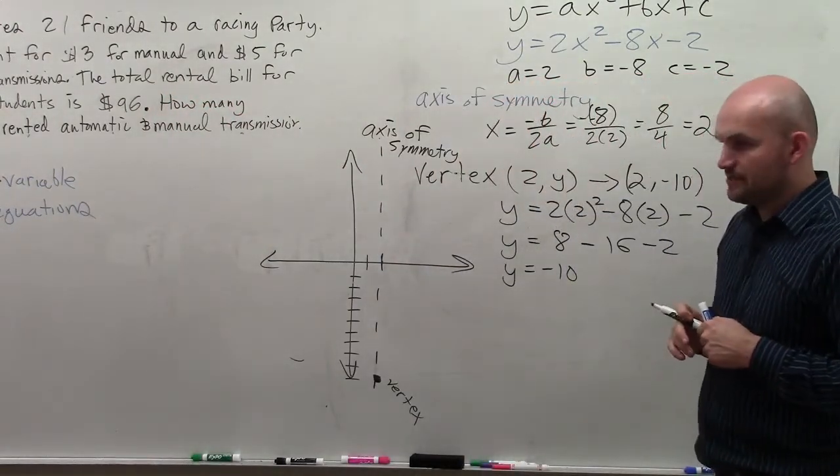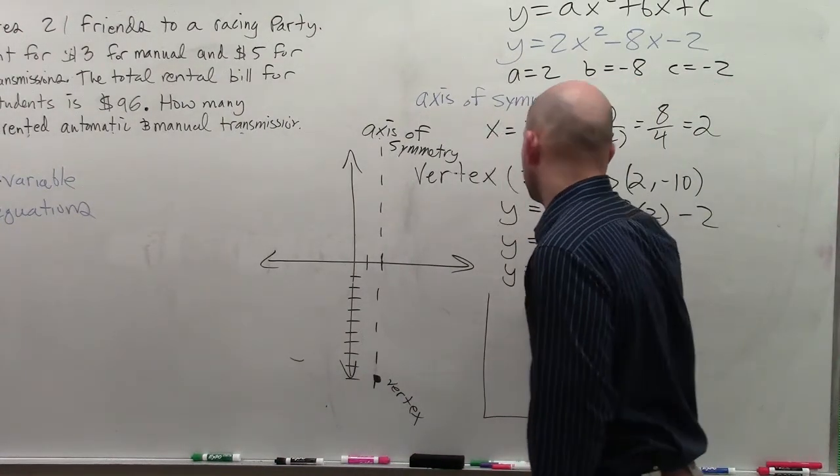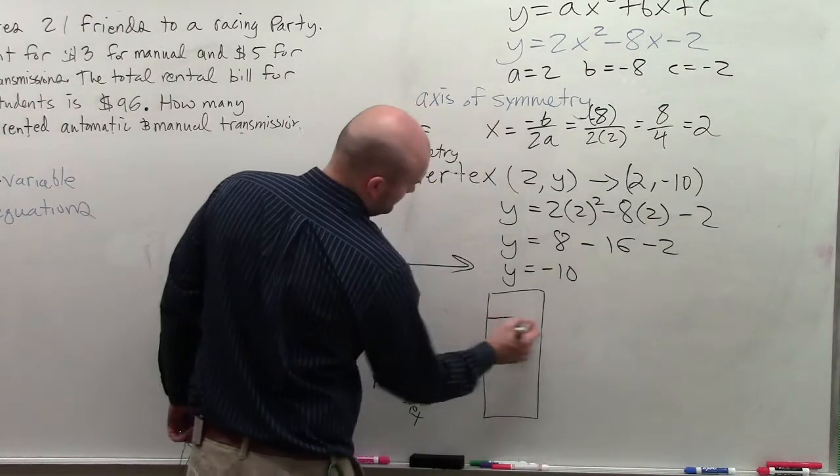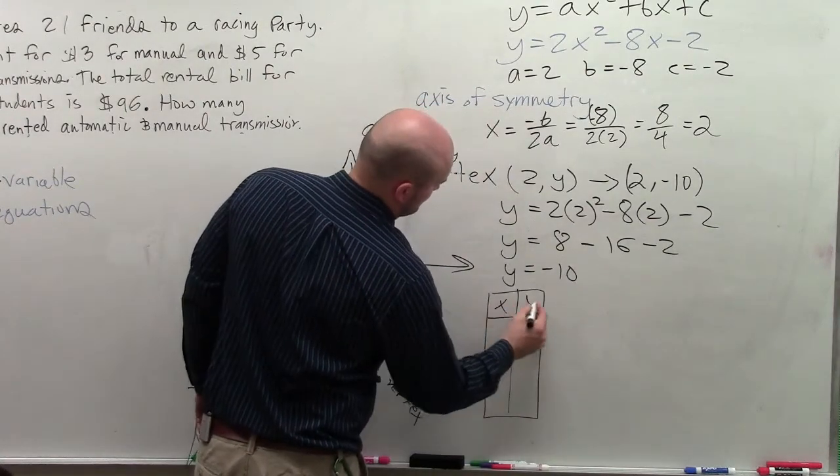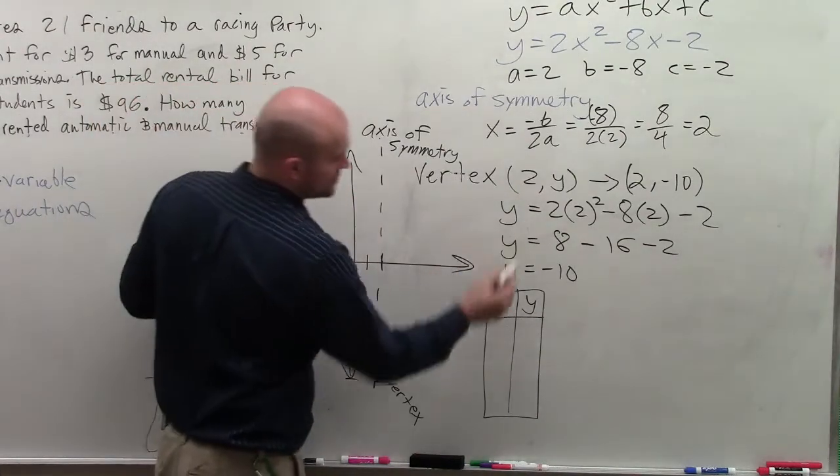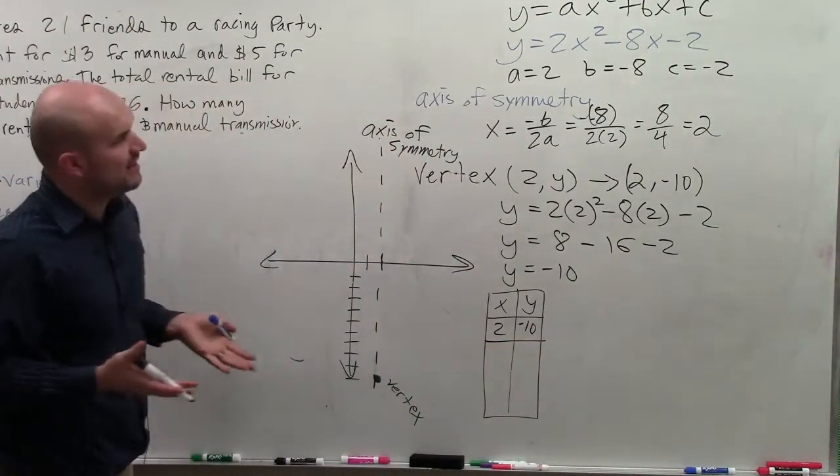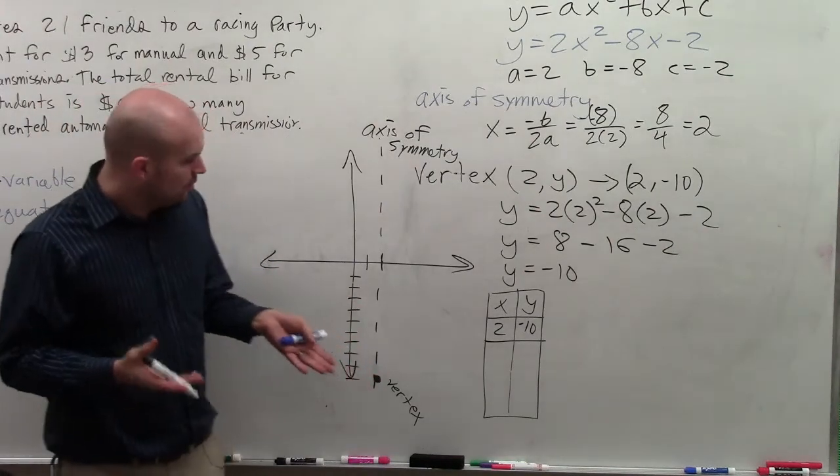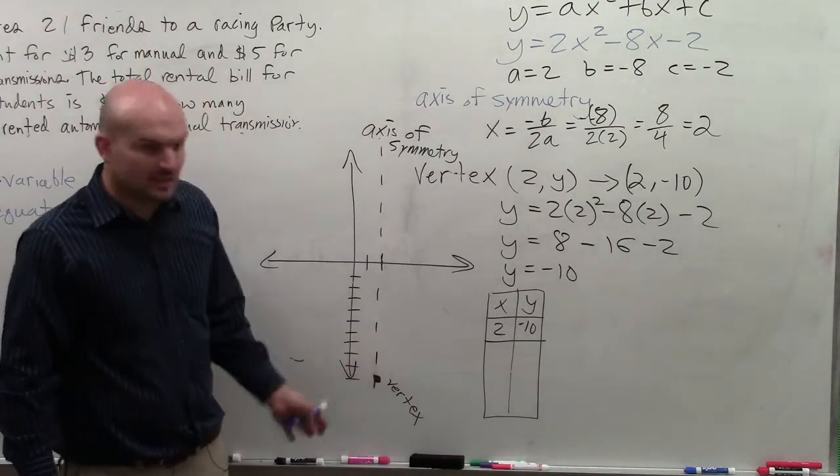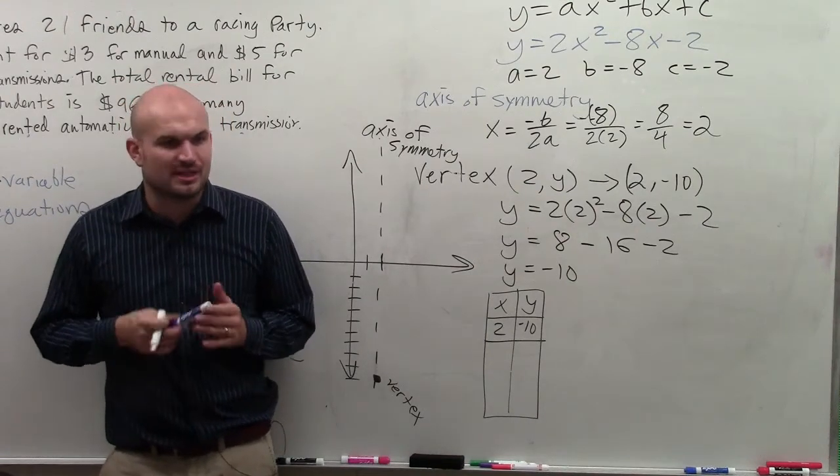Does everybody understand what I've done so far? Okay. So here's my x and my y. I already know one point, which is 2, negative 10. Now the next thing that I want to do is identify what should be some points to the right or to the left. So anybody want to offer their suggestion? Should I choose points to the left or to the right?